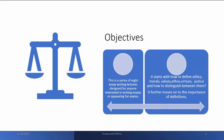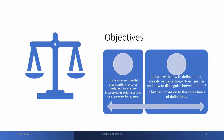Therefore, what you have to do is: exams come and go, but your knowledge search will continue. We will start with how to define ethics, morals, values, ethos, virtues, and justice, and how to distinguish between them. People keep talking about 'he has no ethics, he has morals, he has values' — I think we need to be very clear in our definitions.